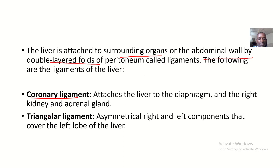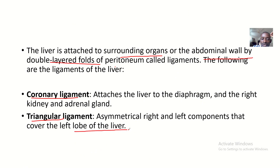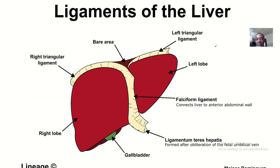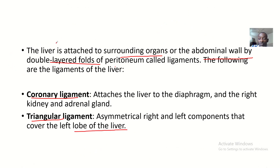Next we have the triangular ligaments. The triangular ligament has asymmetrical left and right components that cover the left lobe of the liver. There is a left triangular ligament and a right triangular ligament, attaching the right and left components of the structures on top of the liver.